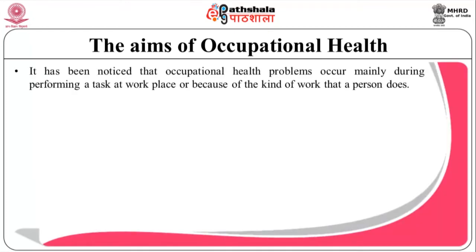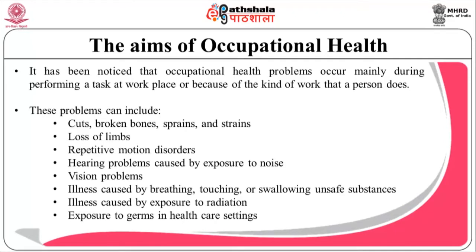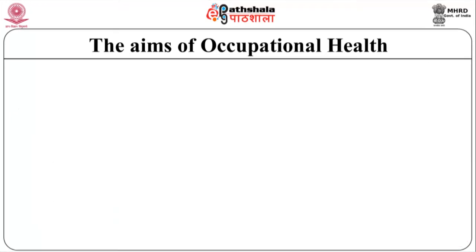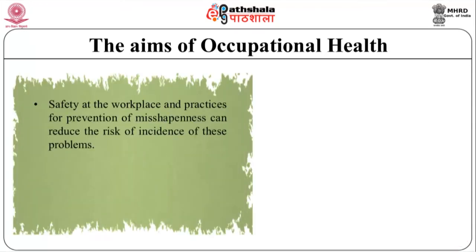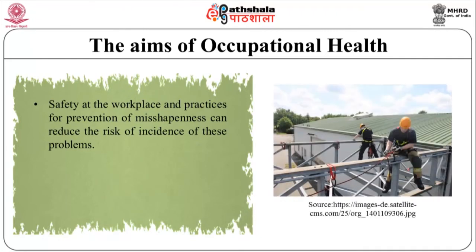Occupational health problems occur mainly during performing a task at workplace or because of the kind of work a person does. These problems can include cuts, broken bones, sprains and strains, loss of limbs, repetitive motion disorders, hearing problems caused by exposure to noise, vision problems, illness caused by breathing, touching or swallowing unsafe substances, illness caused by exposure to radiation, and exposure to germs in healthcare settings. Therefore, safety at the workplace and practices for prevention of mishap can reduce the risk of these problems.